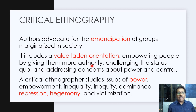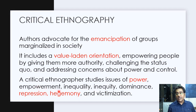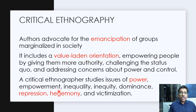In critical ethnography, the authors advocate for the emancipation of groups marginalized in society. It is described as a value-laden orientation, as it talks about empowering people by giving them more authority, challenging the status quo, and addressing concerns about power and control. A critical ethnographer would study power, empowerment, inequality, inequity, dominance, repression, hegemony, and victimization. When we do critical ethnography, we are advocating for the emancipation of groups marginalized in society.